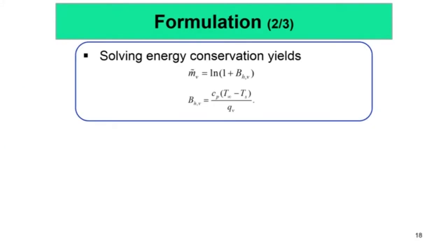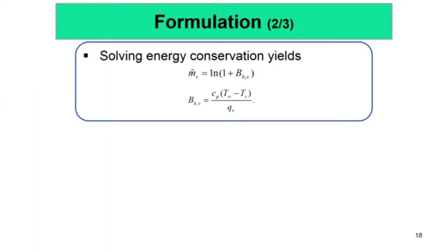This is not enough because you do not know what your Y₁s is. Even if you can solve for ṁṽ, you do not know Y₁s, and to know Y₁s you need the energy conservation equation. This is reasonable because the droplet is evaporating because somebody is supplying the latent heat of vaporization, and that latent heat is being supplied by the ambient. So you have to consider the conduction and convection processes involved to close this problem.